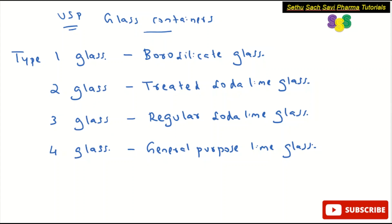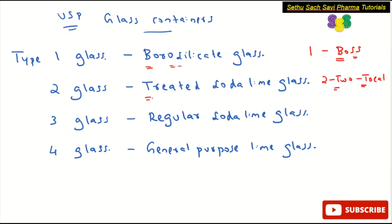We can remember these using a mnemonic. For Type 1: every institute has one Bose — Bose means borosilicate. For Type 2: write it as TWO — T for treated — so Type 2 glass is the treated soda lime glass.